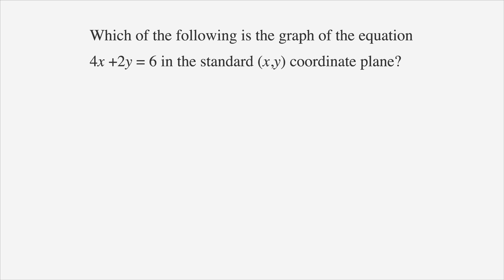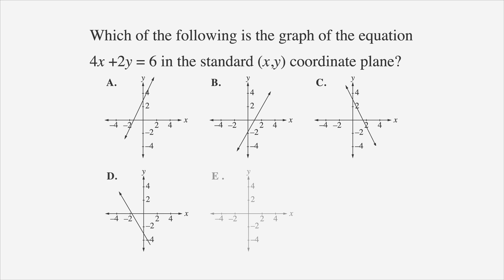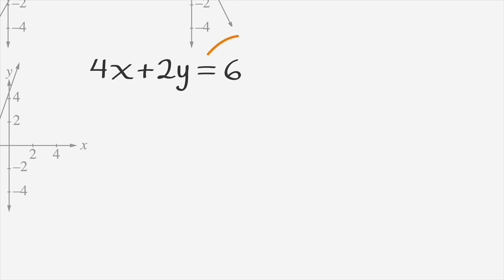Which of the following is the graph of the equation 4x plus 2y equals 6 in the standard xy-coordinate plane? The answer choices show graphs of our equation. To find the slope and y-intercept, we first need to convert the equation into the y equals mx plus b format, which means we need to do a little algebra.